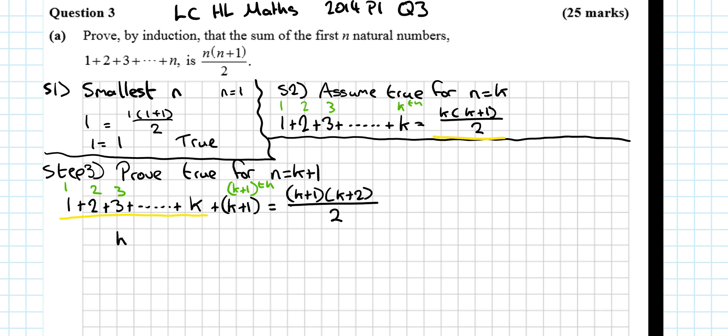So you're getting k by k plus 1 over 2, plus, so that's the yellow section, plus this brown section, k plus 1, is equal to k plus 1, k plus 2, by 2.